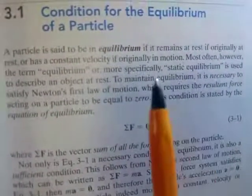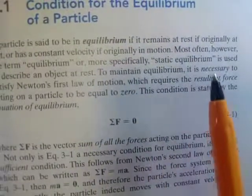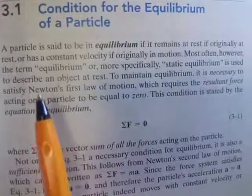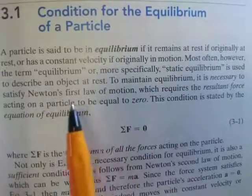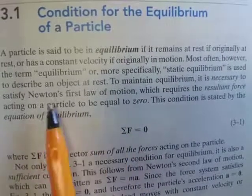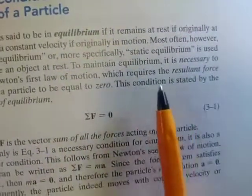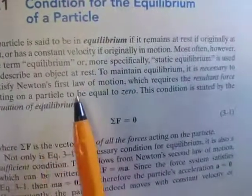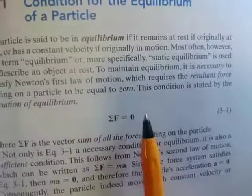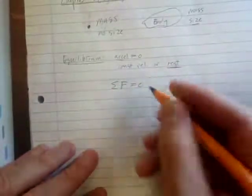And then, so it speaks here again, it says, to maintain equilibrium, it is necessary to satisfy Newton's first law of motion. Guys, Newton's first law of motion, which requires the resultant force on a particle to be equal to zero. So then, what we need to see is this equation here, which I alluded to in the previous video.